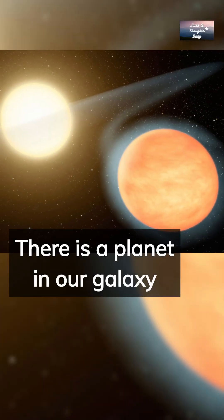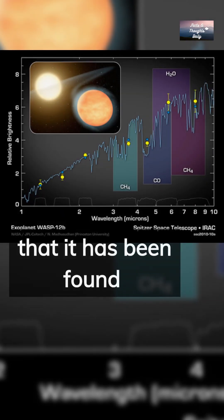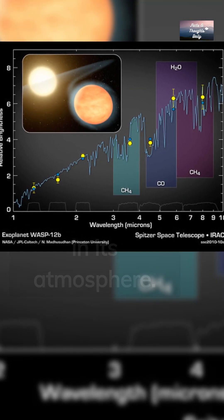There is a planet in our galaxy called WASP-12b that is so hot that it has been found to contain vaporized metals in its atmosphere.